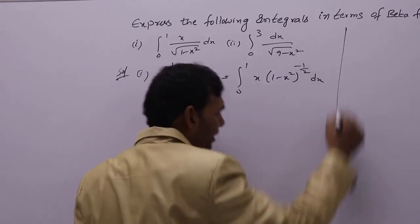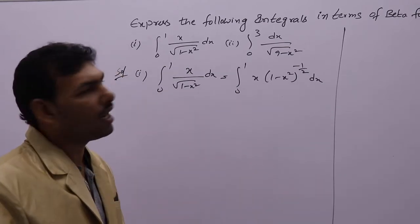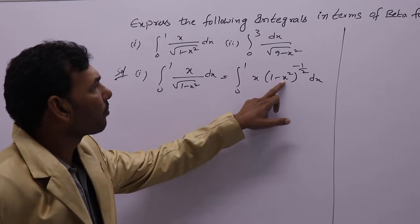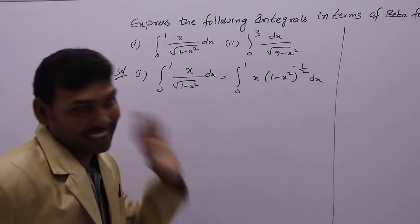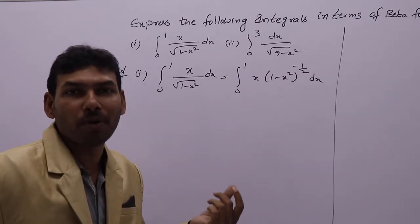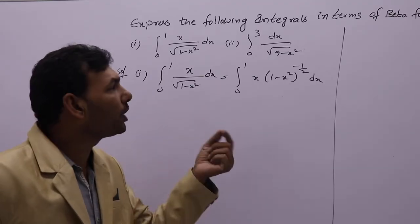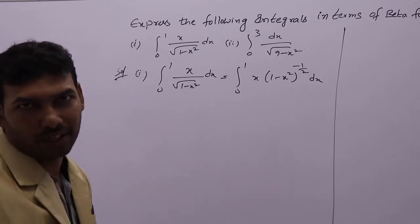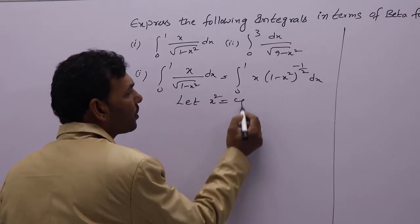Now we need to express this one in terms of beta. To express in terms of beta, you should have here x power m minus 1 and 1 minus x whole power n minus 1. But what you are having here is x square. So we need to make x square as one variable. That is the assumption: x square equal to y.